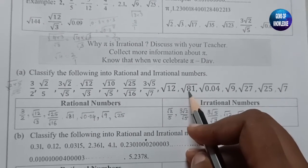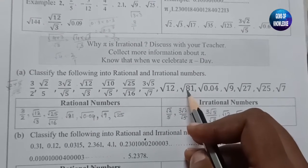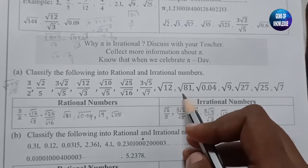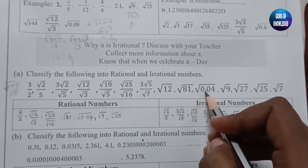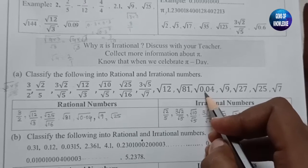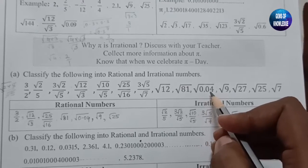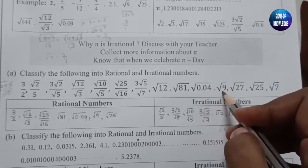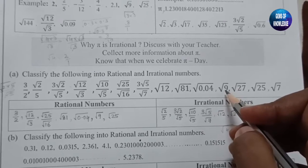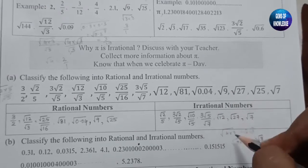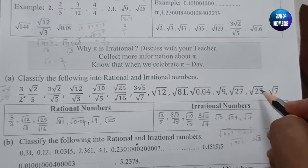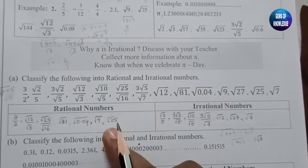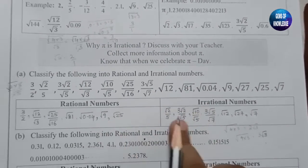Root 81 equals 9 (since 9 times 9 is 81), so it is rational. Root of 0.04 equals 0.2 (since 0.2 times 0.2 is 0.04), which is rational. Root 9 equals 3 — rational. Root 27 is irrational. Root 25 equals 5 — rational.